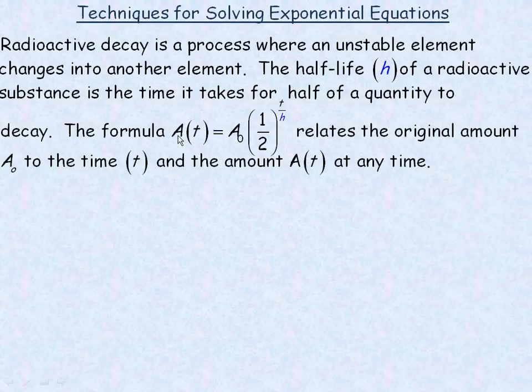Now, the formula relates the amount you start with, the amount you have at any time, and the half-life. A(t) is the amount at any time, A₀ (or A sub zero) is the original amount, times one-half to the power of time over the half-life. That's the formula we're going to use in the example in the next page.